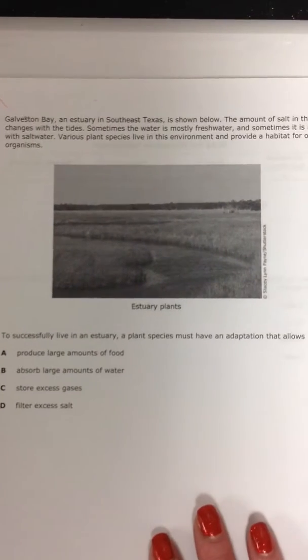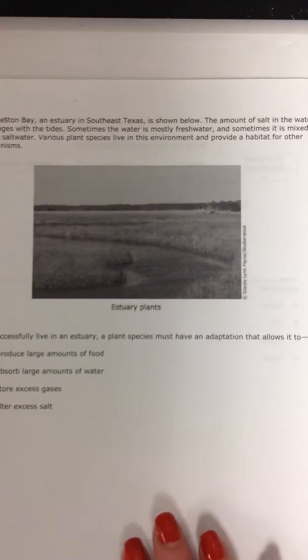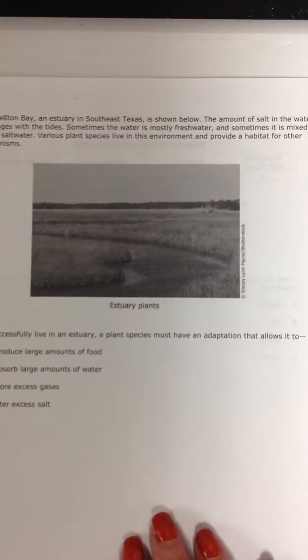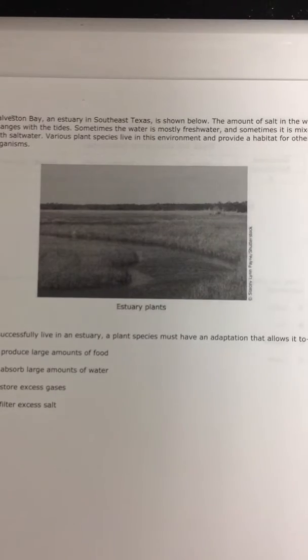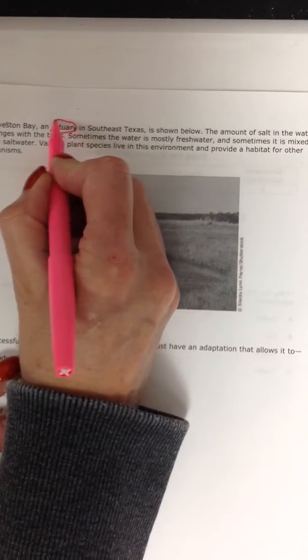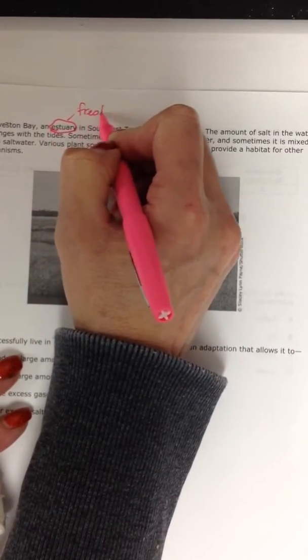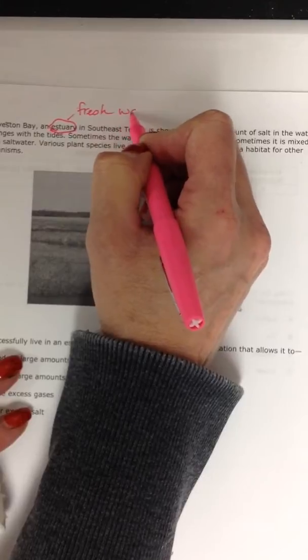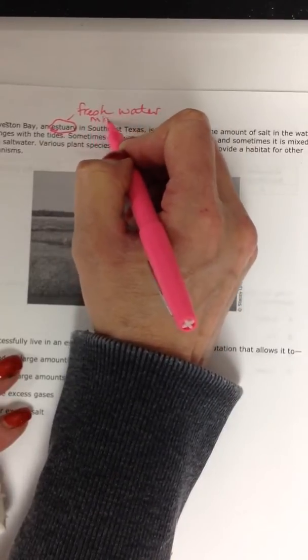Question 21. Galveston Bay, an estuary in southeast Texas, is shown below. The amount of salt in the water changes with the tides. Remember, an estuary is a place where fresh water mixes with ocean water.